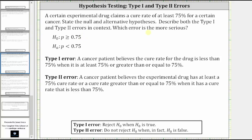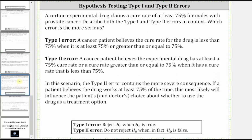The last question is which error is more serious? Is it more serious for a cancer patient to believe the cure rate for a drug is less than 75% when it's actually greater than or equal to 75%, or is it more serious for a cancer patient to believe the experimental drug has a cure rate of at least 75% when in fact it is less than 75%? The type two error is more serious and has more severe consequences.